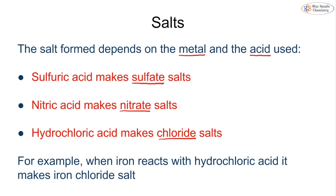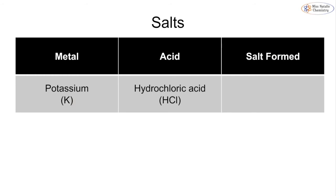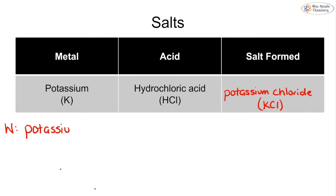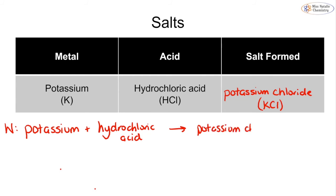Let's look at examples of how to write these as equations. If my metal is potassium and the acid is hydrochloric acid, the salt is named with the metal first: potassium chloride, which has the symbol KCl. The word equation is: potassium + hydrochloric acid → potassium chloride + hydrogen. Remember, we always use an arrow — never an equals sign.